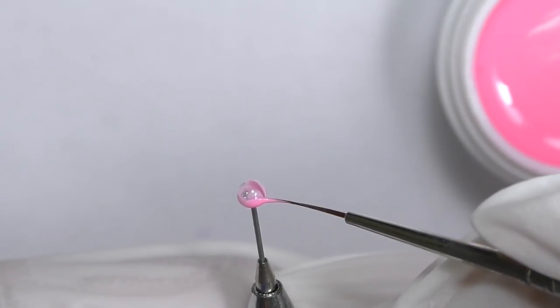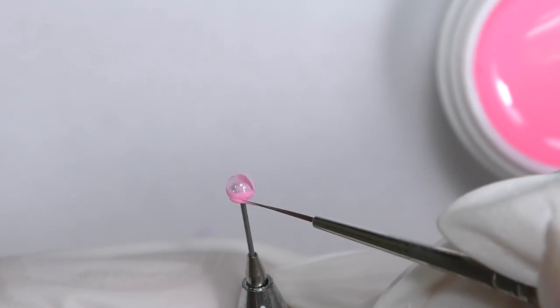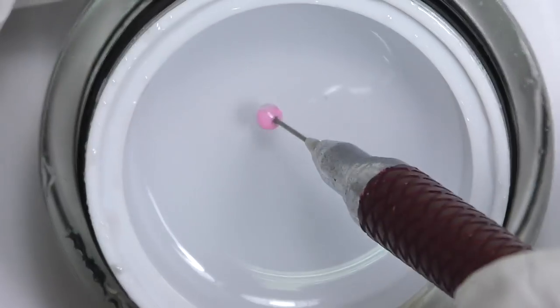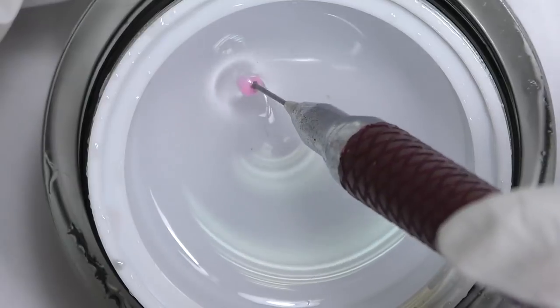Then it is time for the next row, and then we continue like this on and on until you're happy with the shape and the size of your flower.